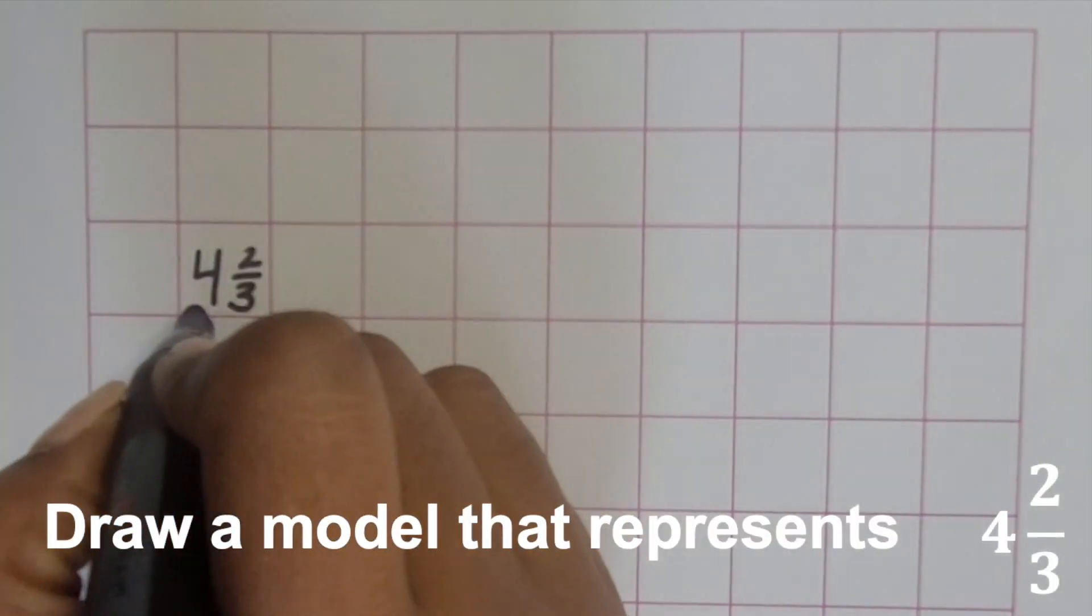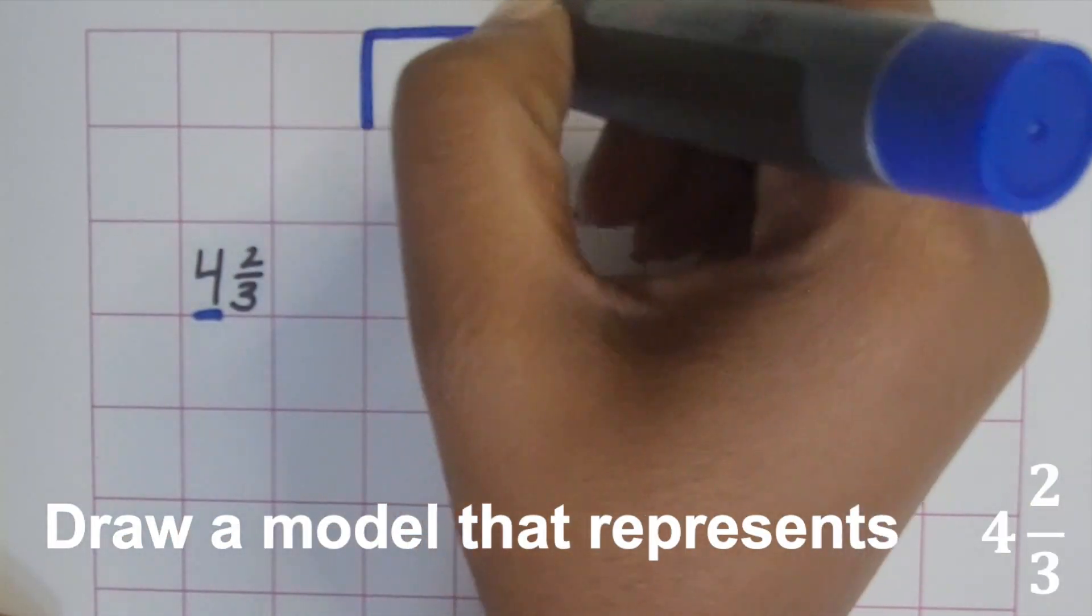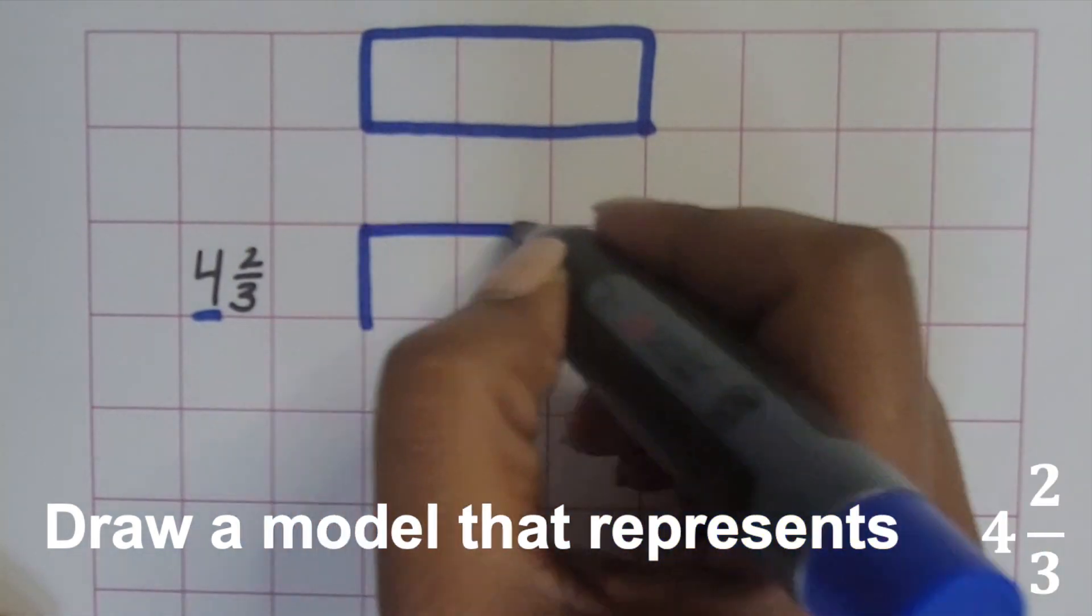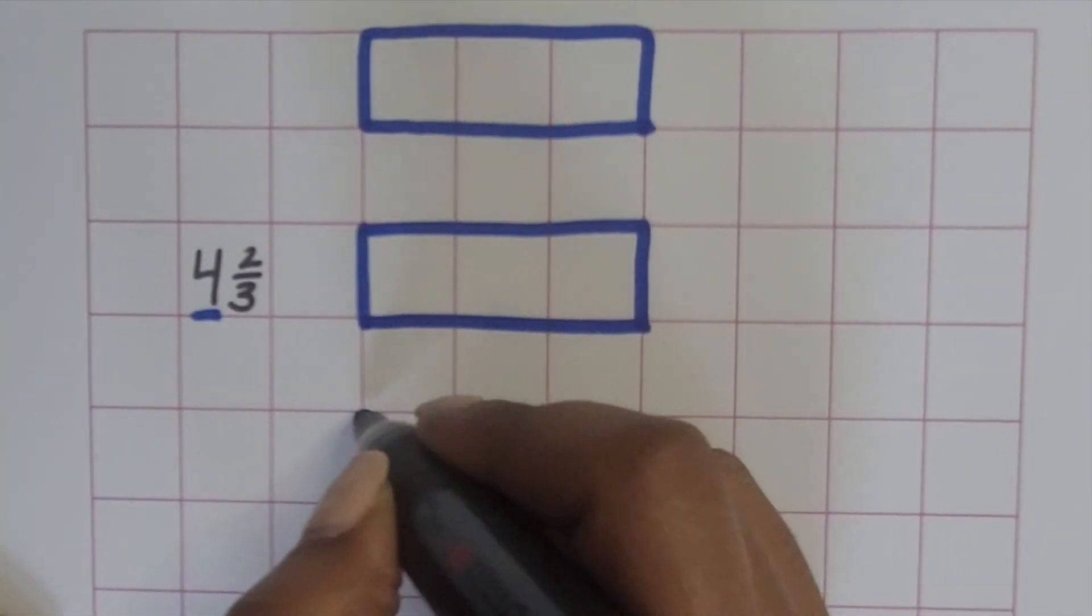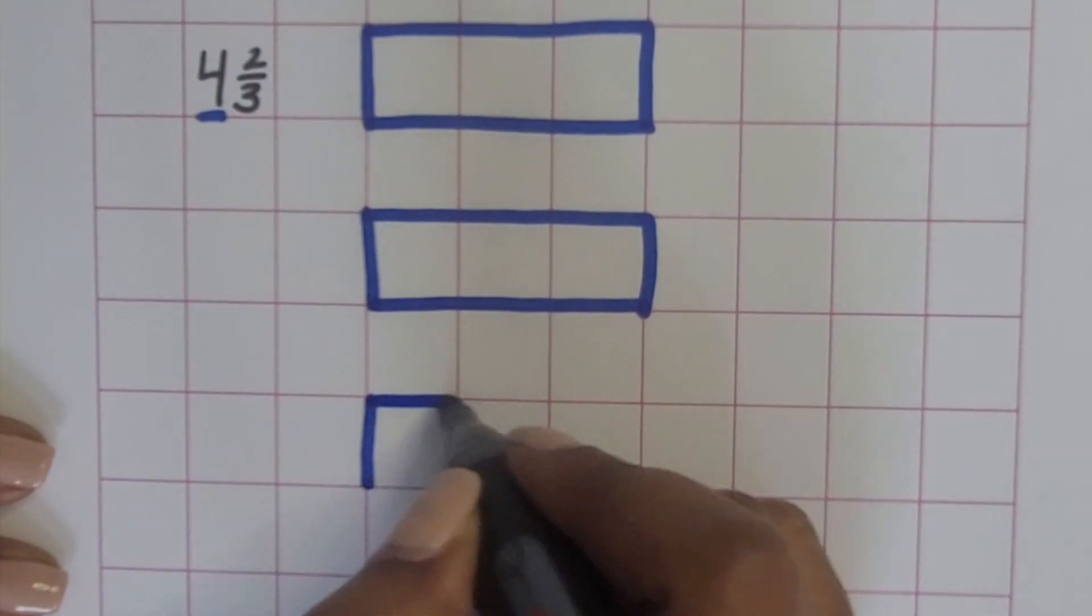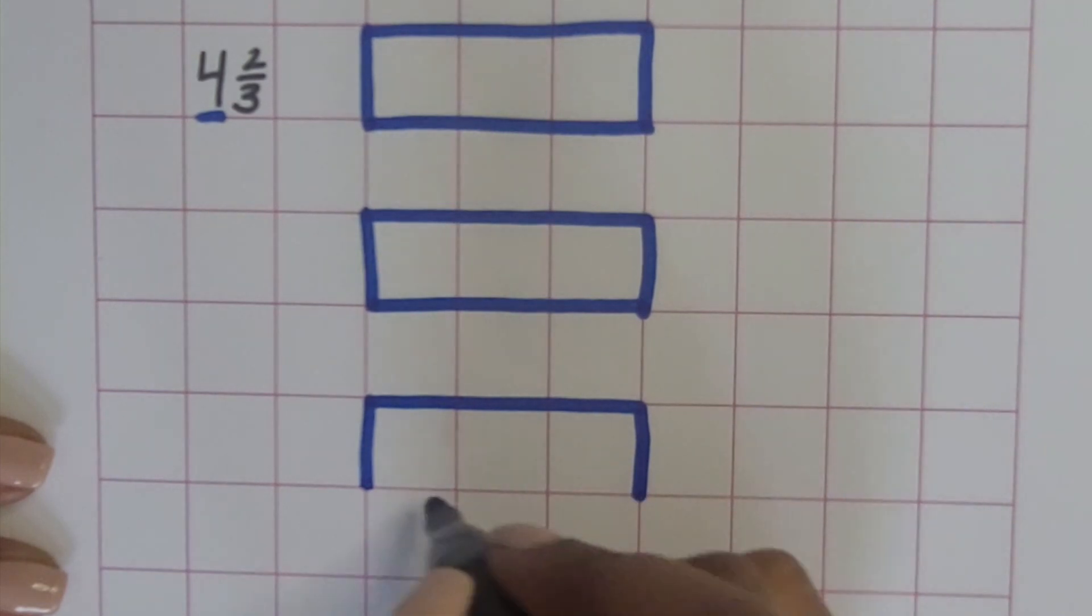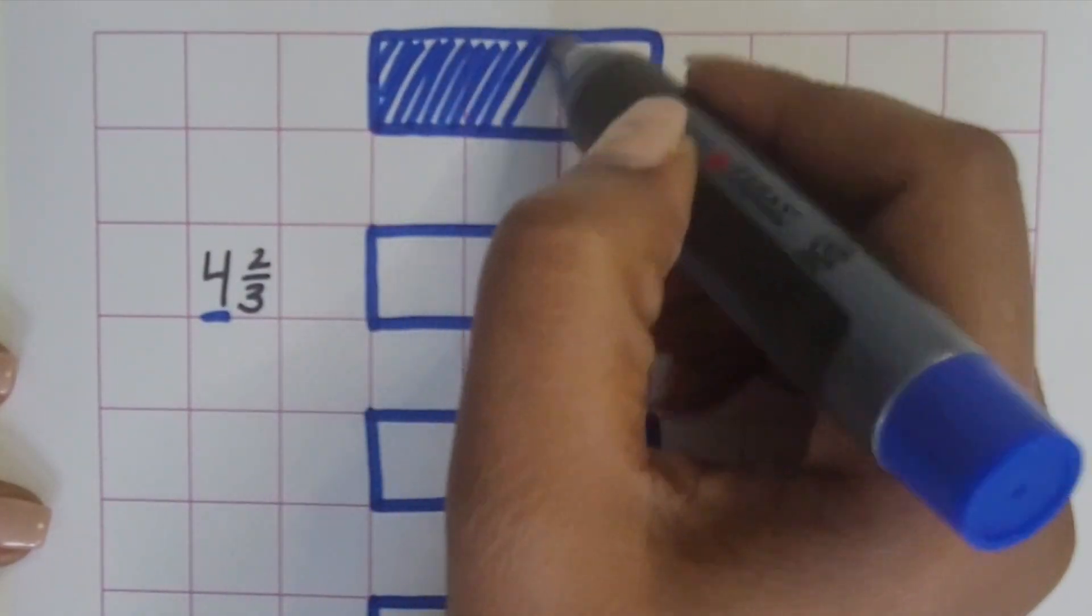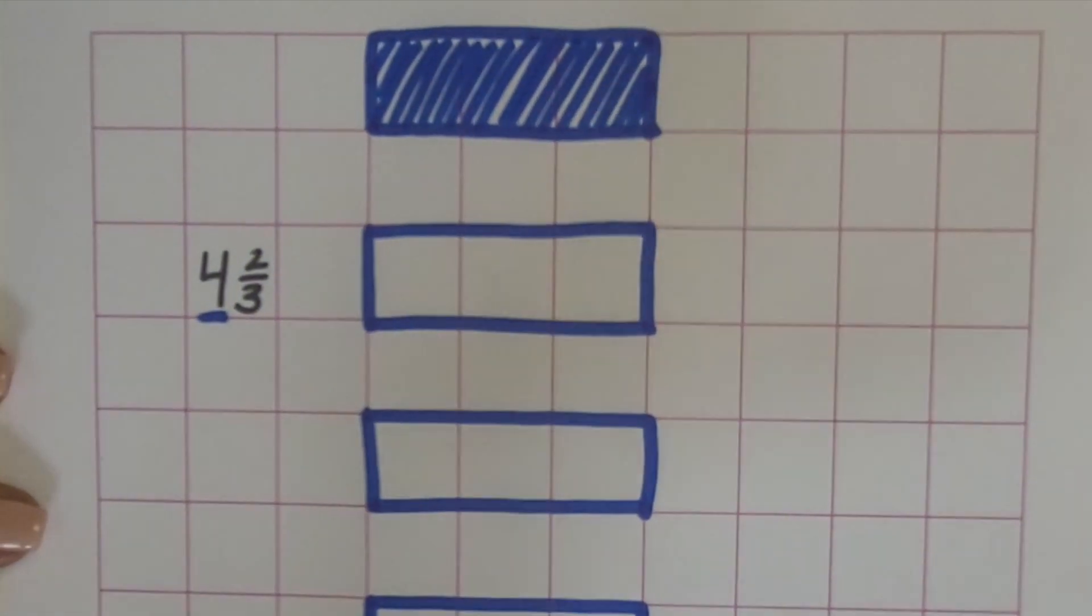Next we'll represent four and two-thirds, so let's start with our whole. Each whole will be three-thirds because our denominator is thirds. A whole is made up of three-thirds, so we have four wholes. Let's shade in all of those wholes to represent that we're using the whole thing.